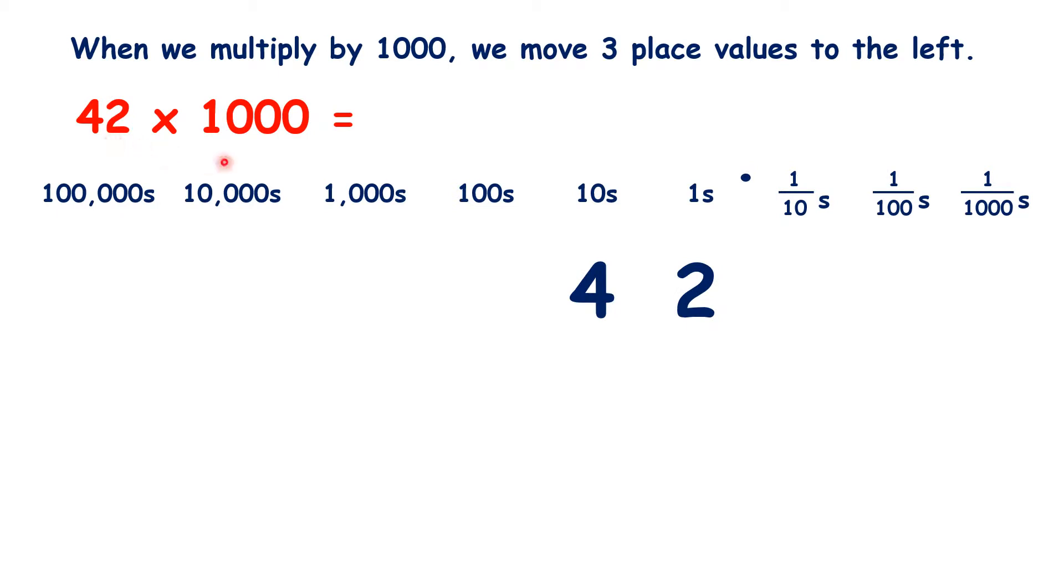Or with 42 times a thousand, again, we move the digits, write zeros in our empty hundreds, tens, and units columns, and we have our answer 42,000.